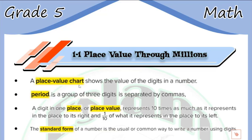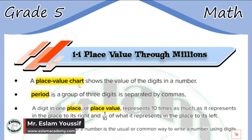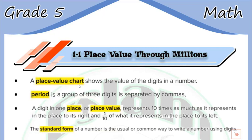The first point in our lesson today is called the place value chart. The place value chart shows the value of each digit in a number. We can divide the number into periods, and each period is formed from three digits. The first digit is called ones, the second digit is called tens, and the third digit is called hundreds.